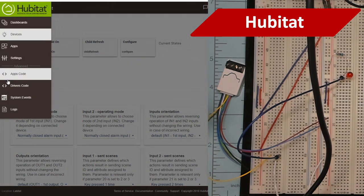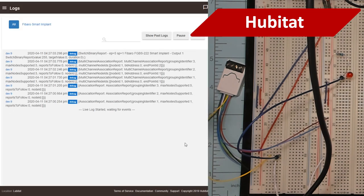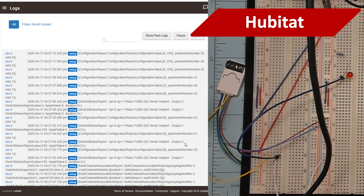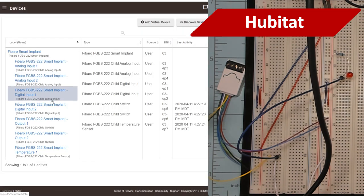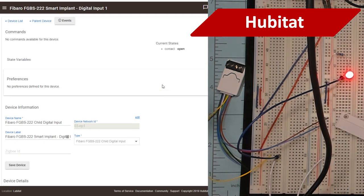You can go over to the logs and watch the magic happen. Now over to the child device page for digital input one. To update the current state, activate the contact sensor. You might have to do this by opening and closing a door. And then you should be good to go.